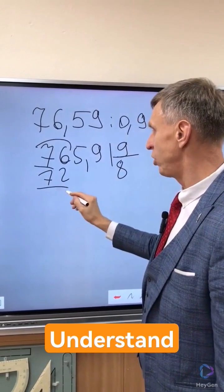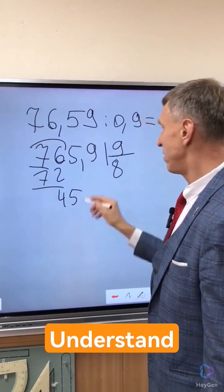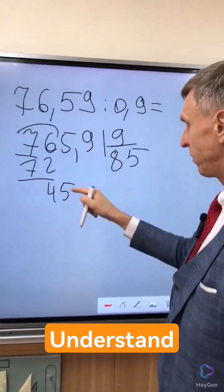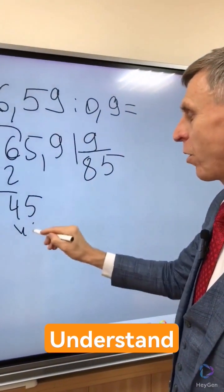5, well, 45 to 9, 5. You see, we remove the next digit in 5 and 9, 45. Zero, division of integers is finished. We put a comma.